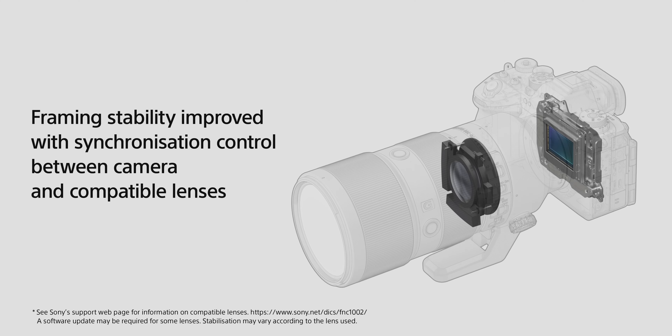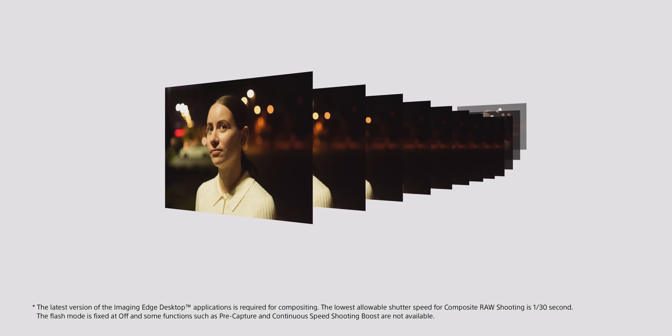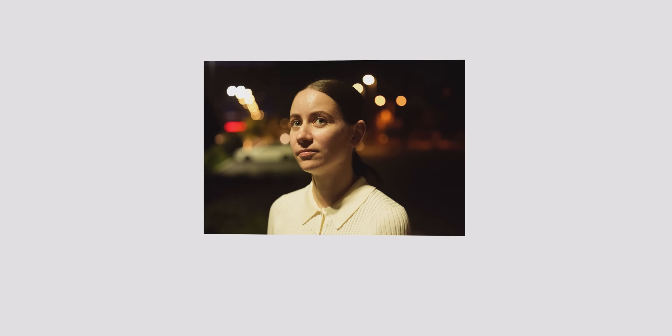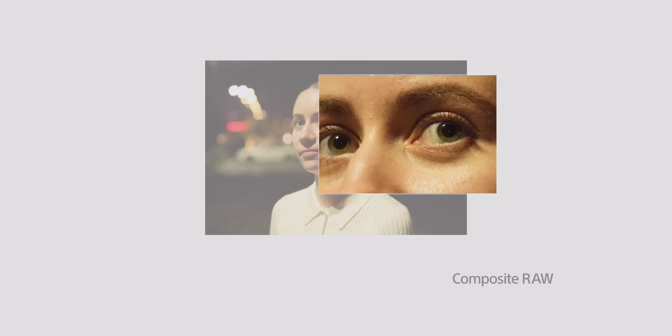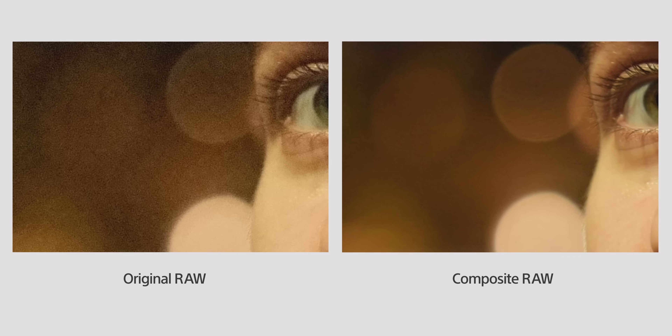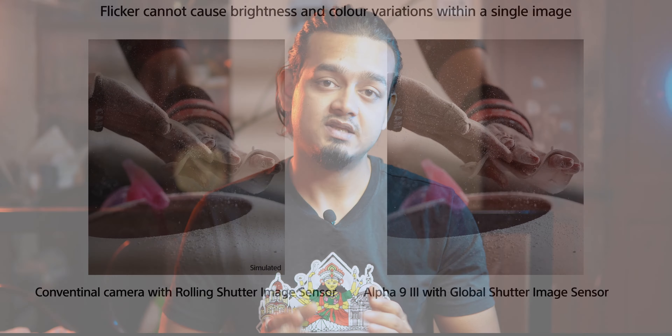The camera also provides 5-axis in-body stabilization (IBIS) with up to 8 stops of stabilization. There is also a composite RAW feature that combines multiple RAW images for lower noise and higher quality output. Anti-flicker is another feature enabled by the global shutter technology, eliminating flicker in photography.